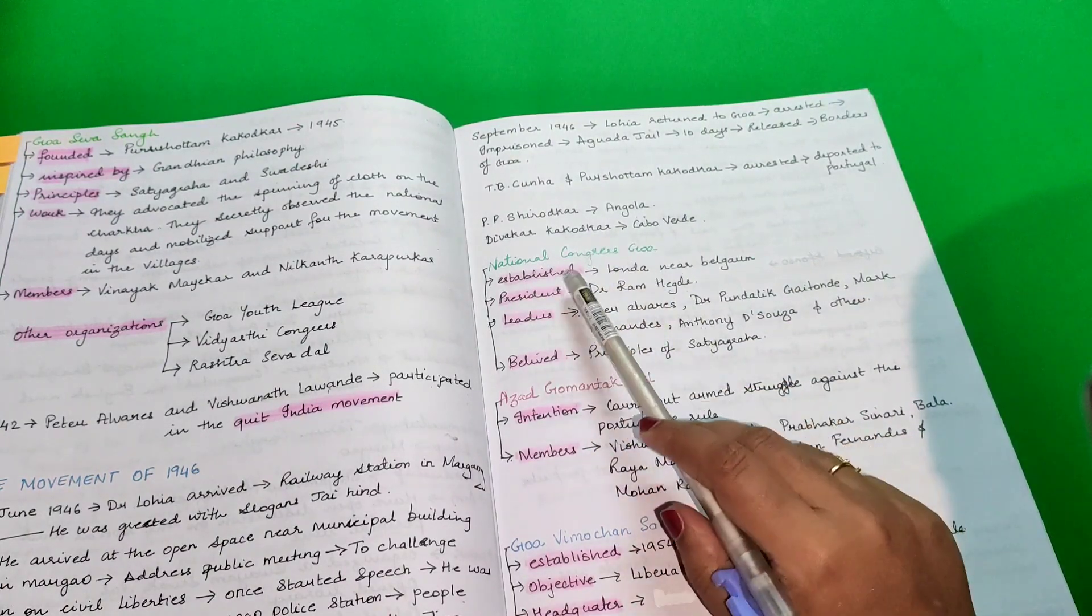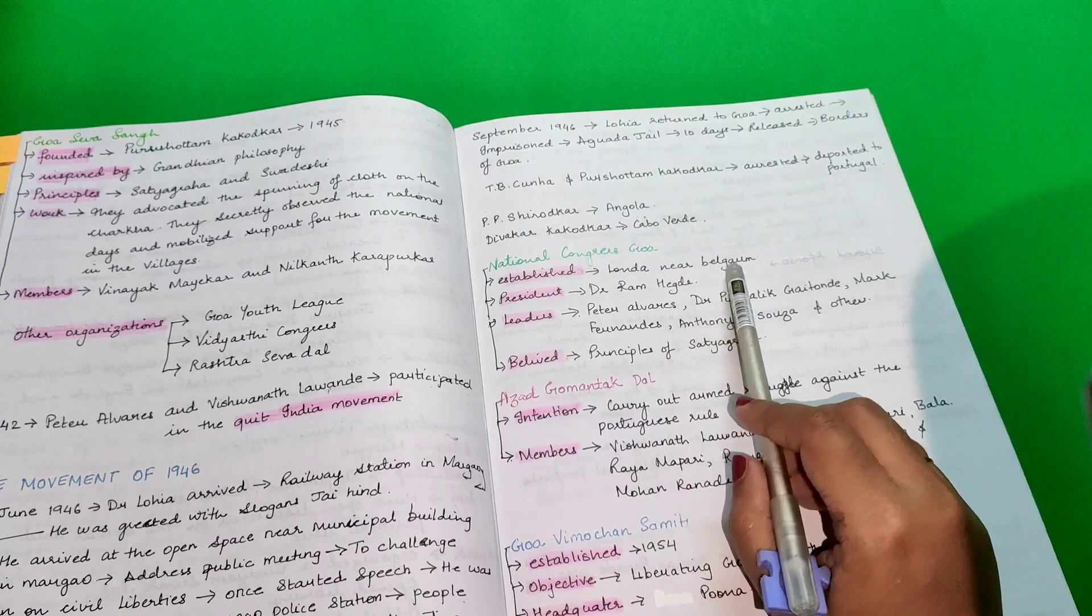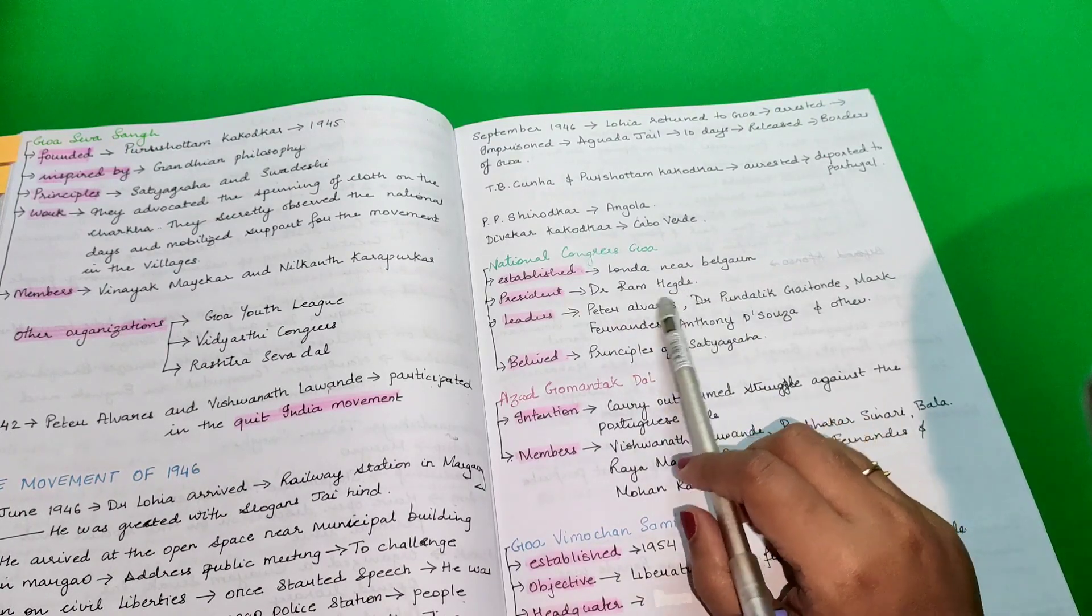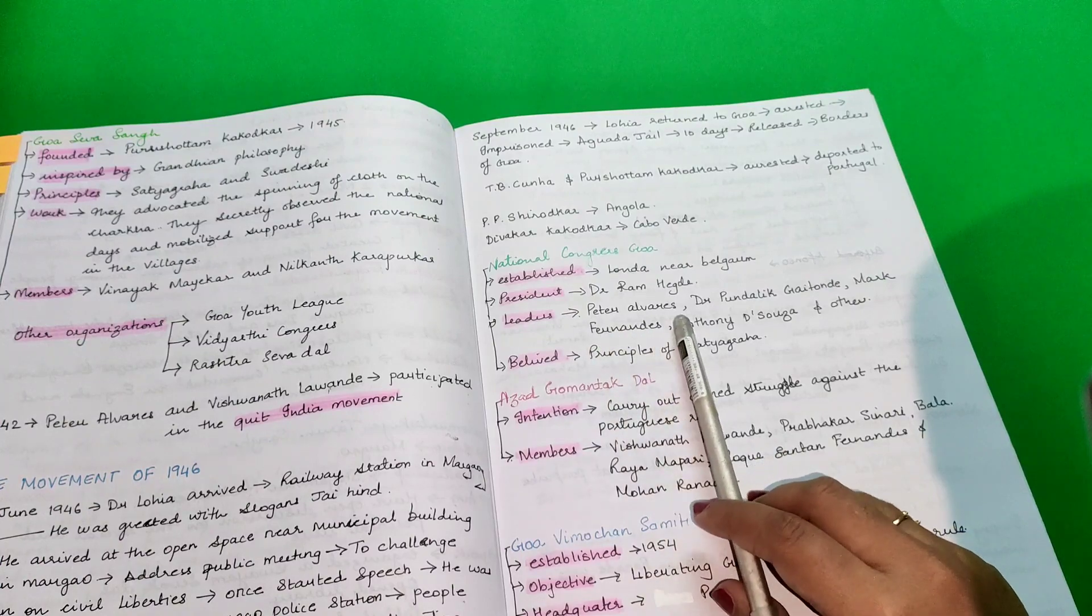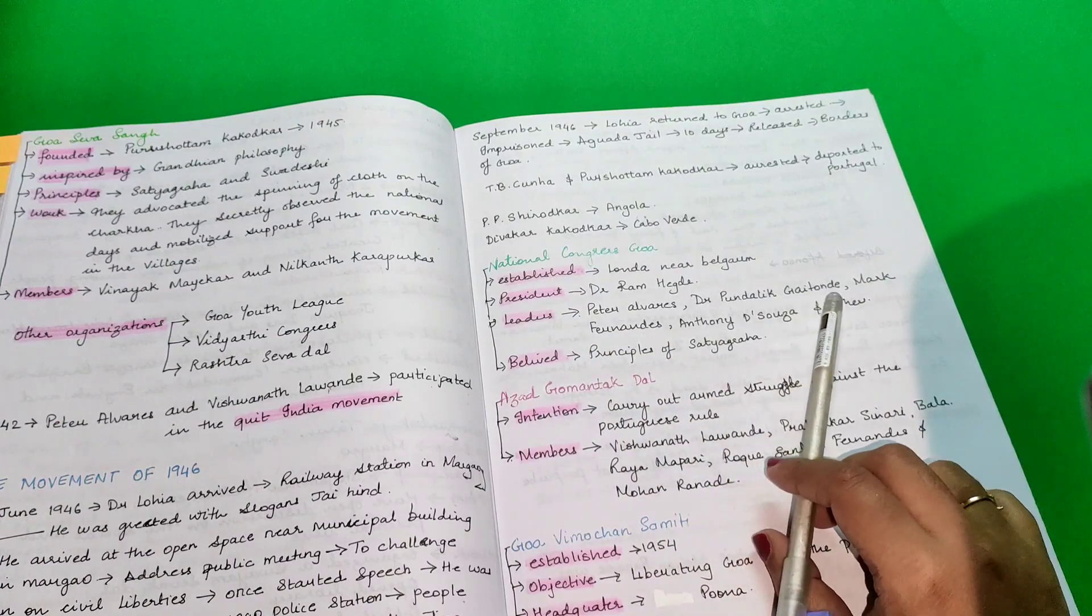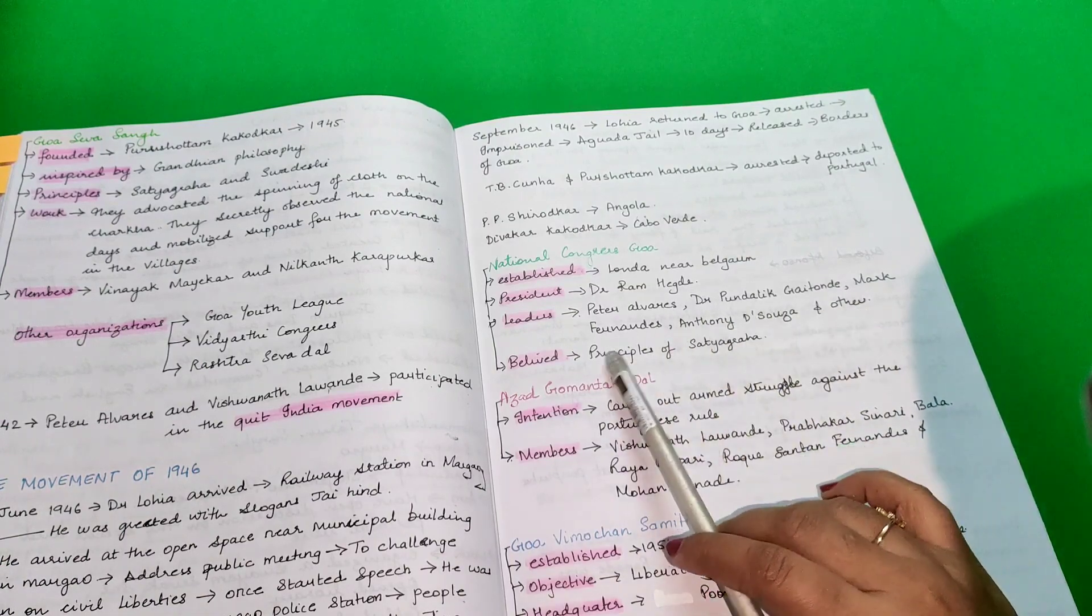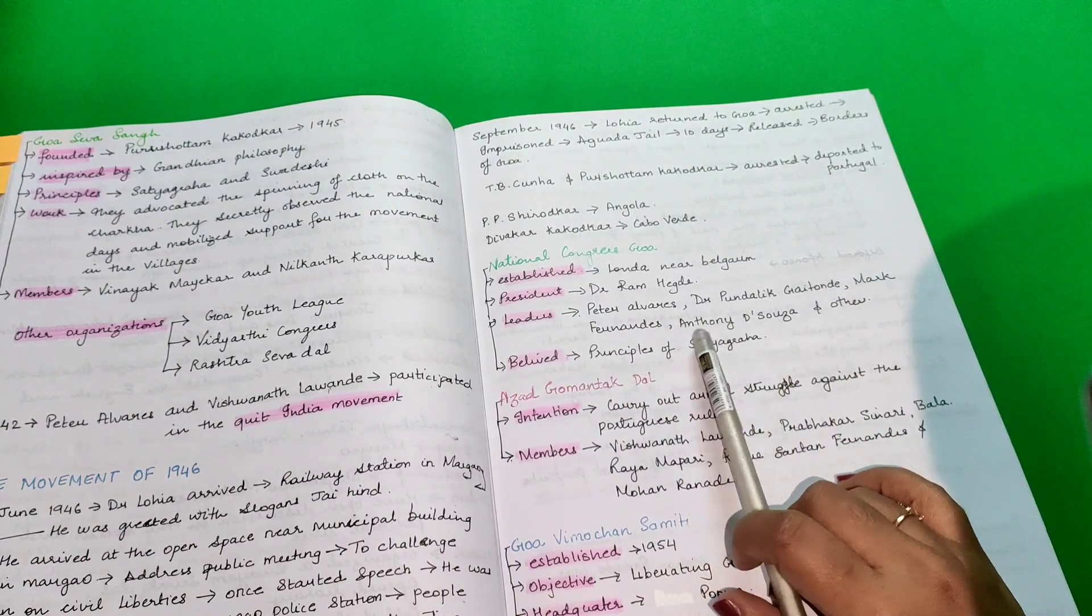National Congress Goa was established in London near Belgium. The president of this was Dr. Ram Heitke. The leaders were Peter Alvarez, Dr. Pundali Gaitonde, Mark Fernandes, Anthony de Souza and others. They believed in principle of Satyagraha.